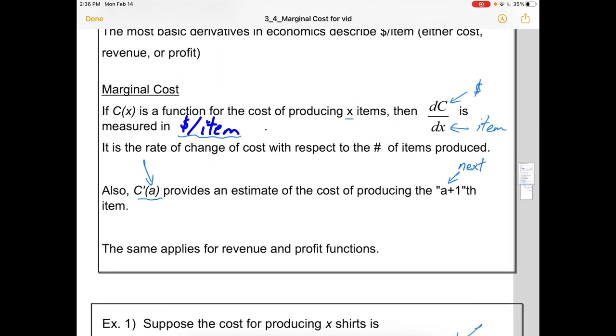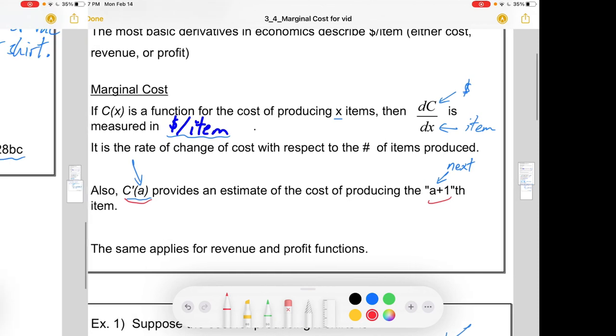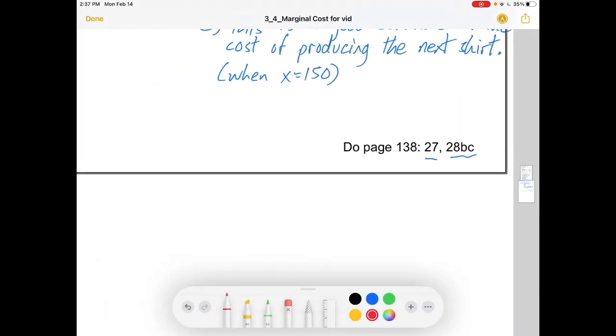Again, the big ideas are that the first derivative is telling you dollars per item, and that it estimates the cost of producing the next item. Once again, there's the practice. I hope this has been helpful. Good luck with the material, folks, and take care.